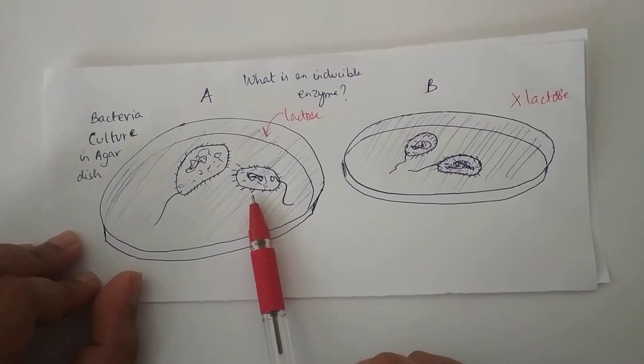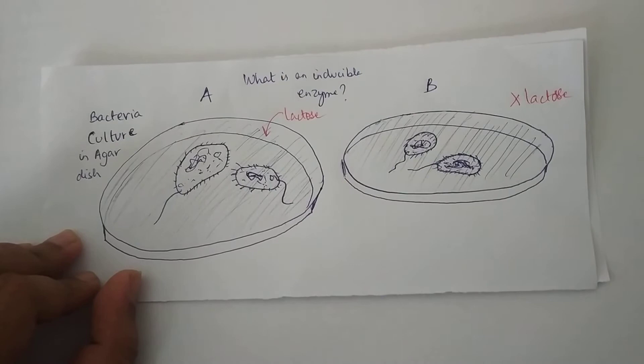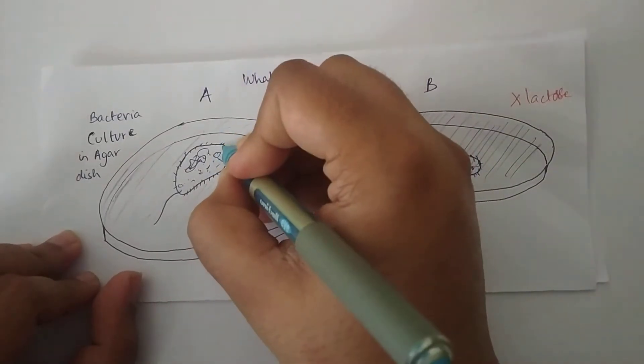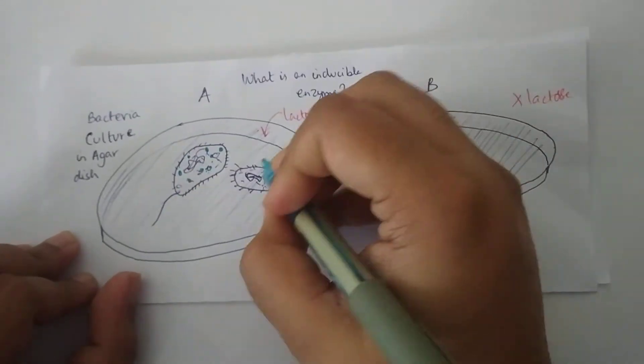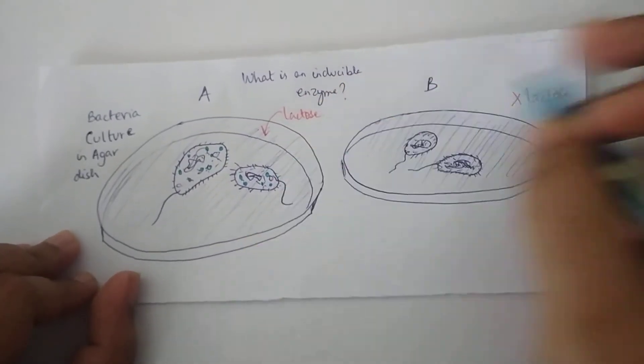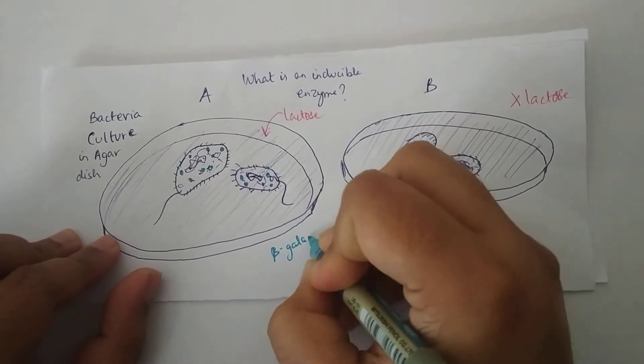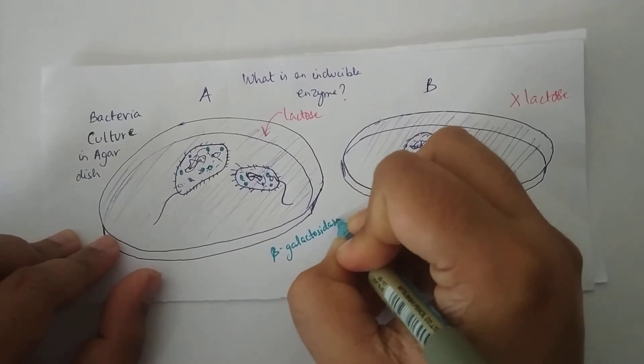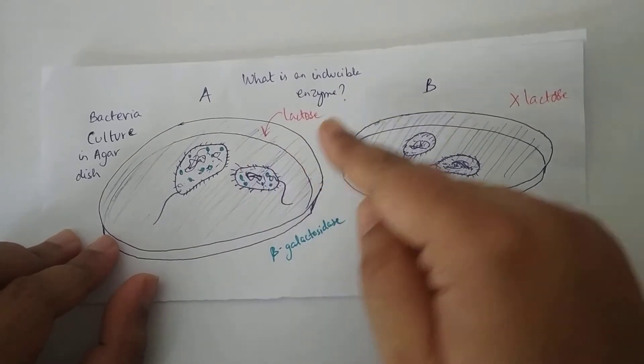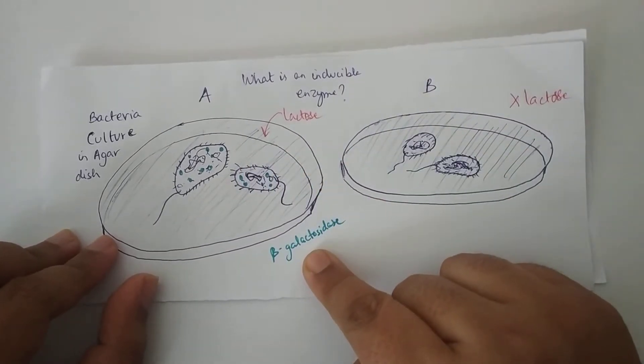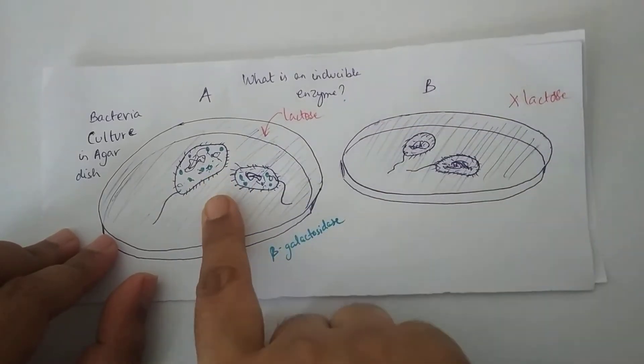What will I notice is that in presence of lactose these bacteria will produce a particular type of enzyme in their cell. I am representing them as the light blue dots. So this enzyme is actually called beta galactosidase. Whenever bacteria grow in a medium containing lactose it will produce this beta galactosidase enzyme to break lactose and produce glucose for their own energy purpose.